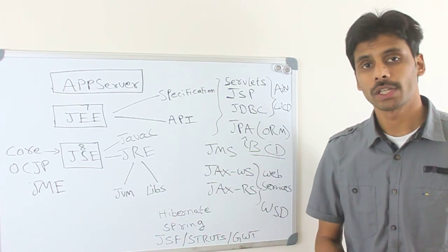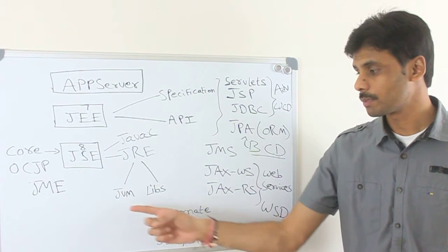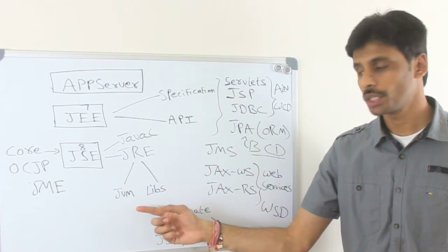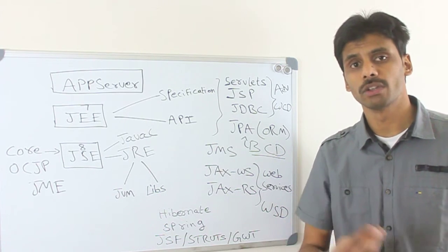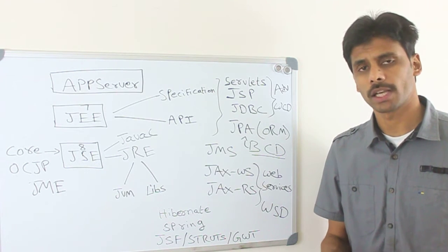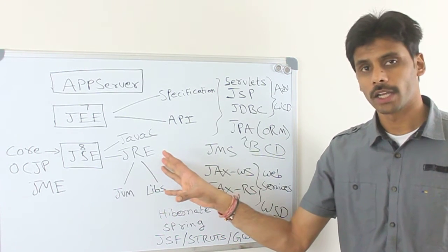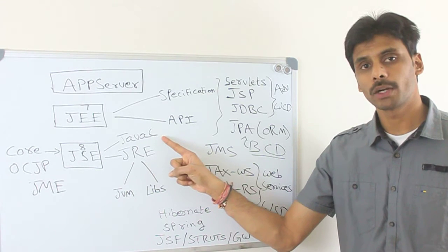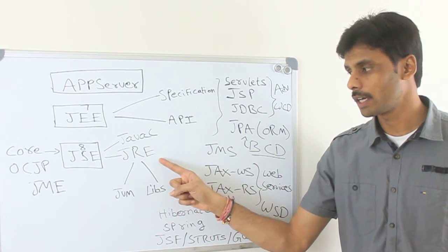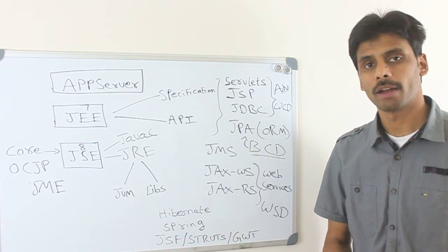The JRE stands for Java Runtime Environment, which is made up of JVM, the Java Virtual Machine, and all the libraries that you can use in your program, the collection API, the input-output streams, etc. all are part of the JRE. So you compile your program into bytecode using these tools, and then you run it using the Java Runtime Environment.